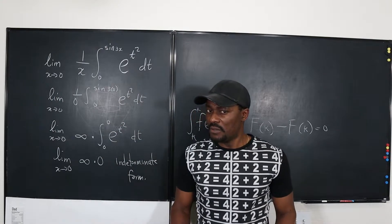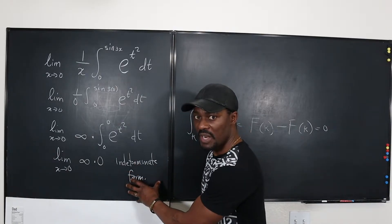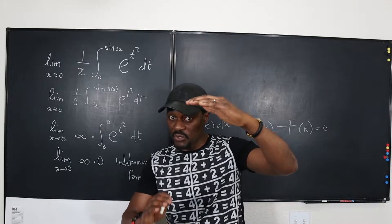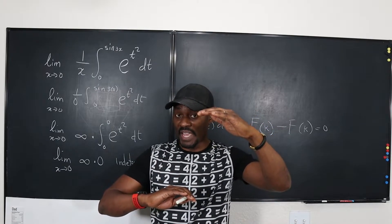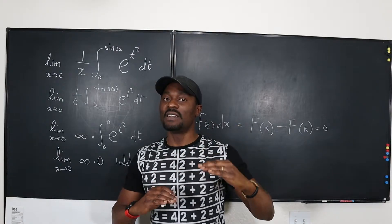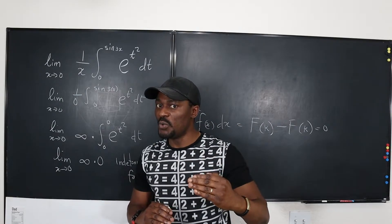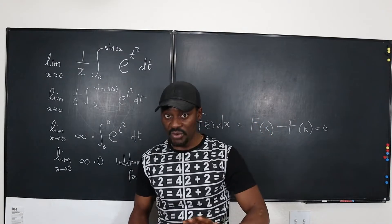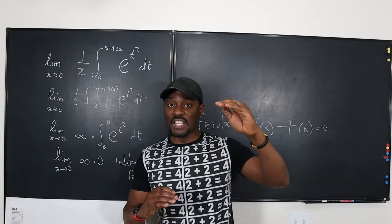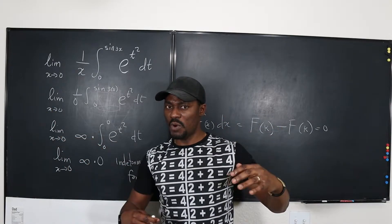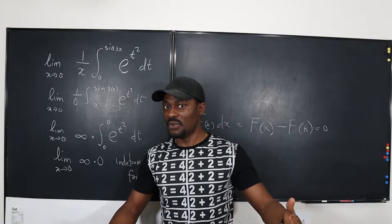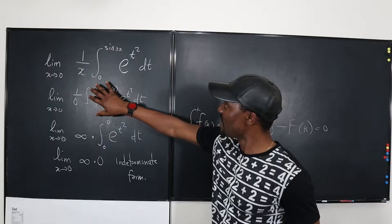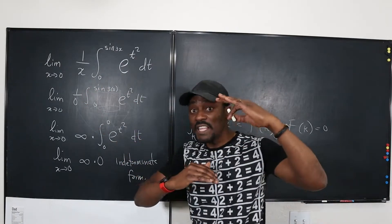So you cannot take this limit. Every time you get the indeterminate form, you have to look for a way to write it as a fraction, h of x over g of x. You have to find a way to write a fraction, take the limit, and apply L'Hôpital's rule — see if it works. L'Hôpital's rule says take the derivative of the top and take the derivative of the bottom. If you plug in 0 and it works, that's your answer. If it doesn't work, see if you can take the derivative again. So let's go back to the original problem and make it into a fraction.